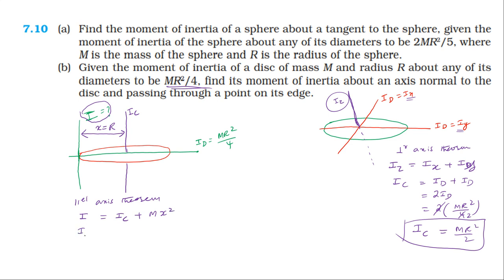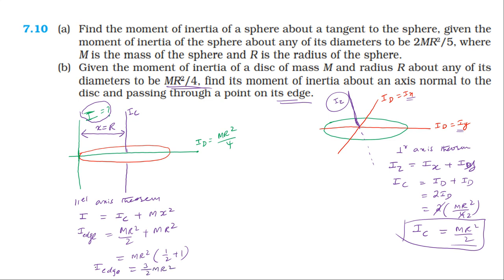The moment of inertia about the edge axis equals the moment of inertia about the center of mass (mr²/2) plus m times r². So, I_edge = mr²/2 + mr² = mr²(1/2 + 1) = 3mr²/2. Therefore, the moment of inertia about an axis passing through the edge and perpendicular to the plane of the disk is 3mr²/2.